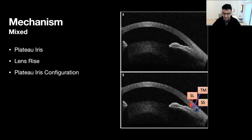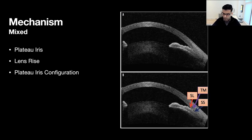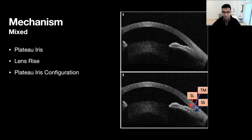Like many cases in medicine, our patients are often some combination of all these mechanisms. This anterior segment OCT shows anterior lens positioning characteristic of lens rise — the push forward of the whole lens complex — but also has rounding of the pupil with a small connection showing some signs of pupil block. Because this is a light-based OCT, we can't formally assess for plateau iris due to lack of ciliary body imaging, but it could also very much be present.